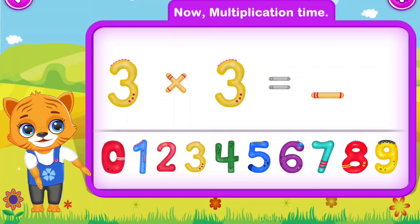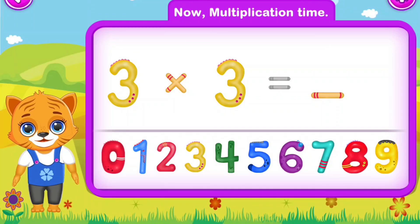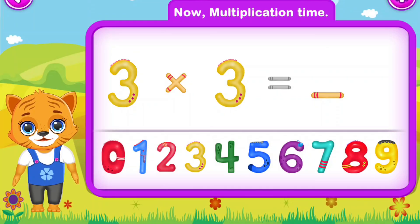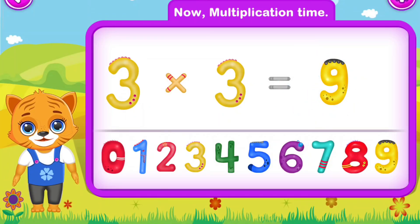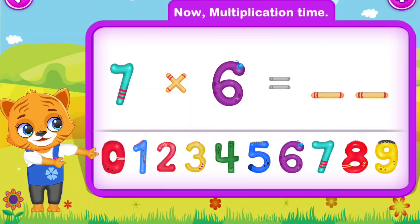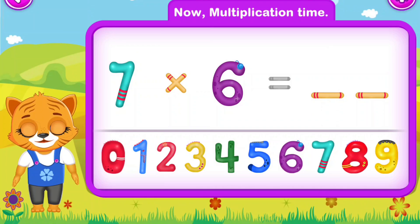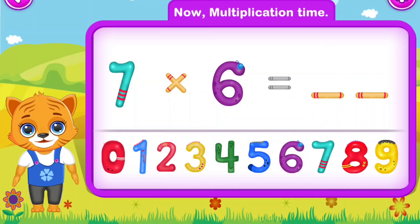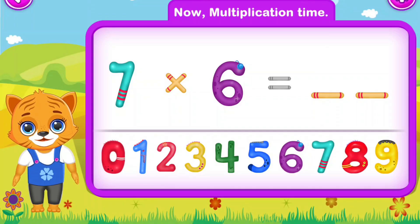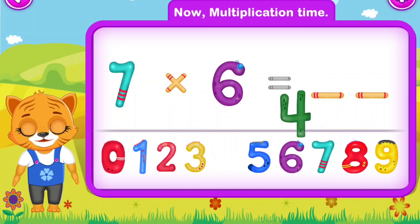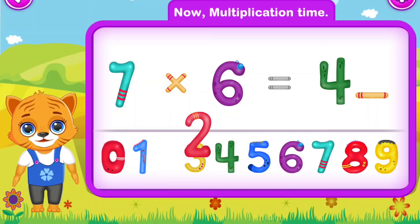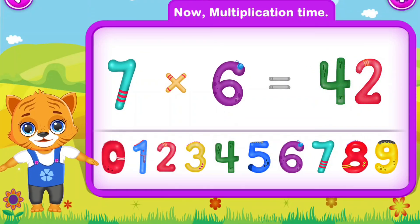Three multiply by three is equal to nine. Perfect! Seven multiply by six is equal to forty-two. Awesome!